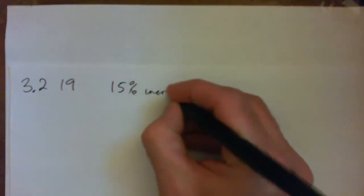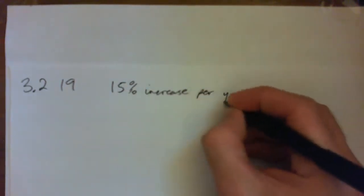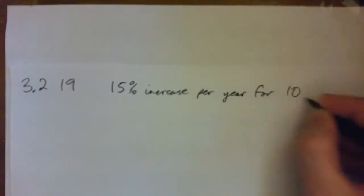Problem 3.219: the library at the university reported that journal prices had increased by 150% over a period of 10 years. The report concluded that this represented a price increase of 15% each year. If journal prices had indeed increased by 15% each year, what percentage increase would that give over 10 years? We have to figure out what a 15% increase per year for 10 years actually represents.